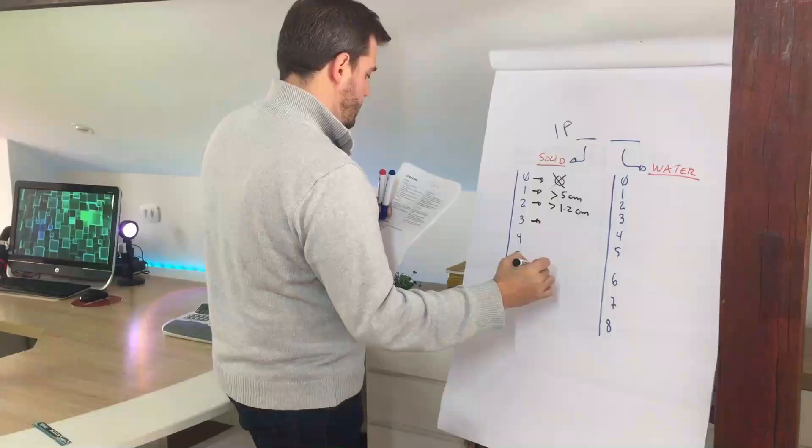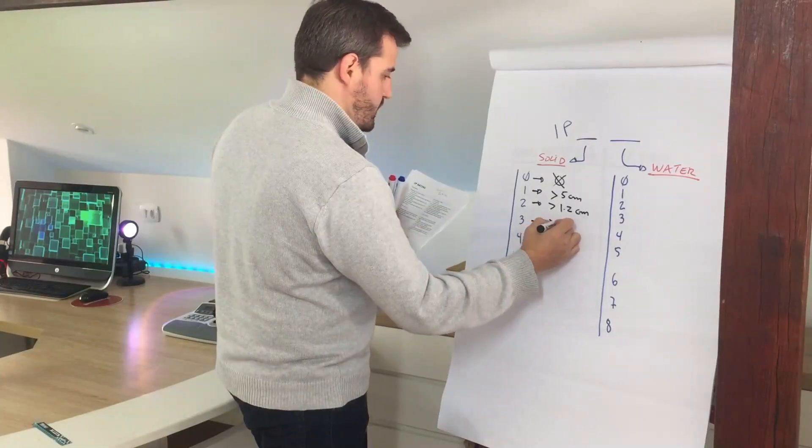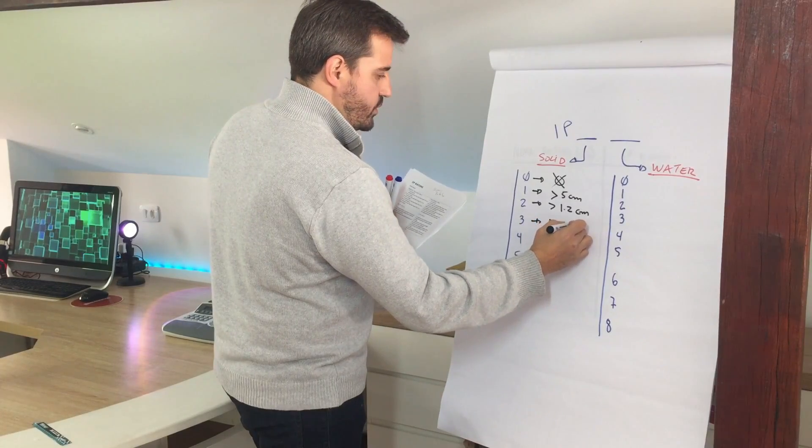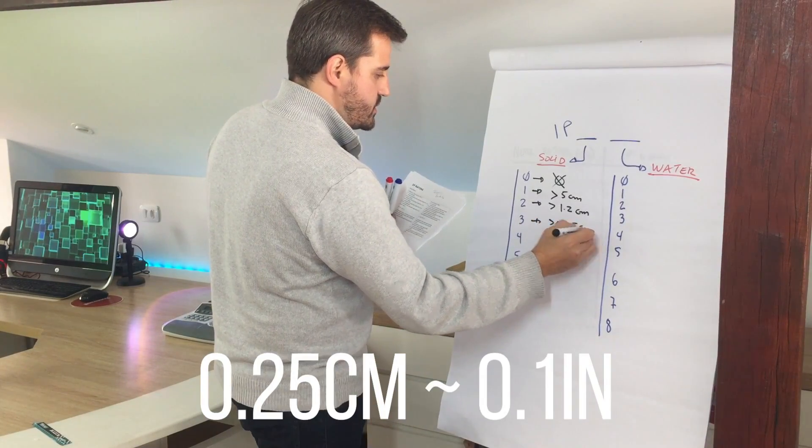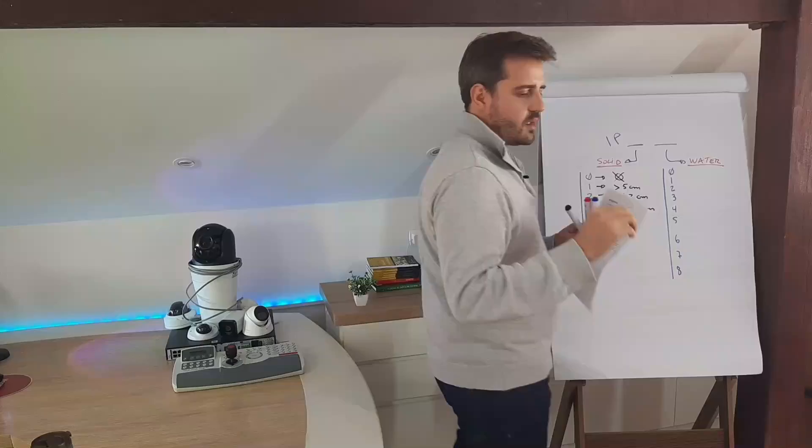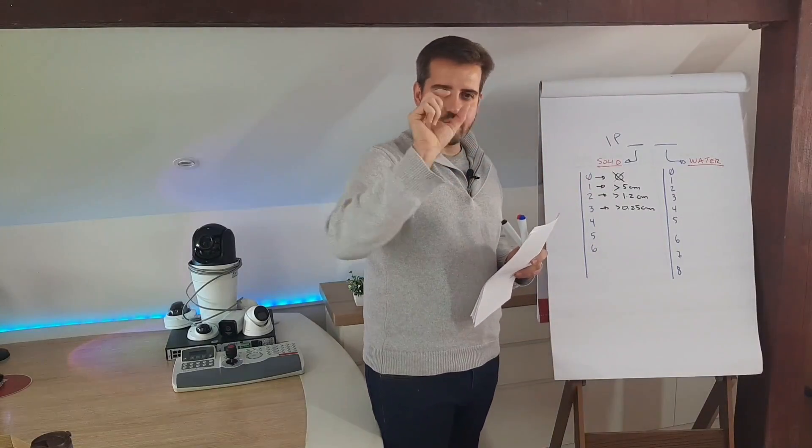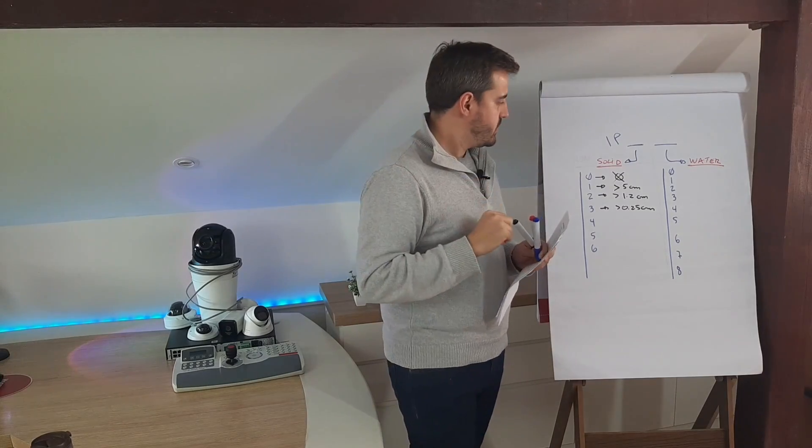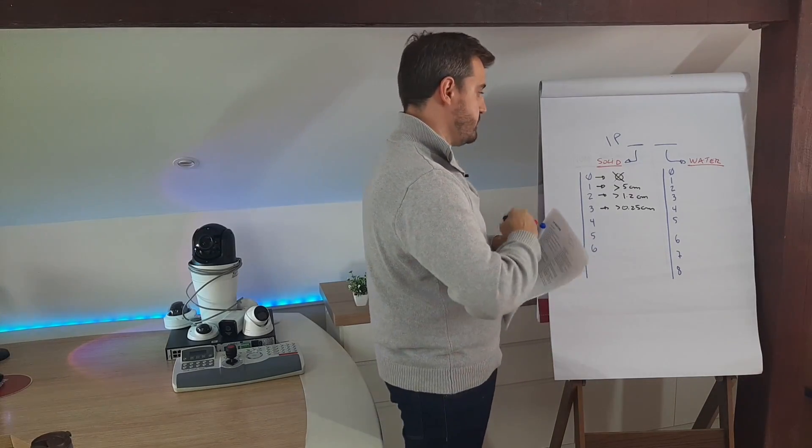Third one, it will be objects higher than 0.25 centimeters, so then start to get smaller but now part of the screwdriver, it's a very thin part but it's still big object.